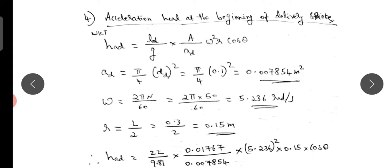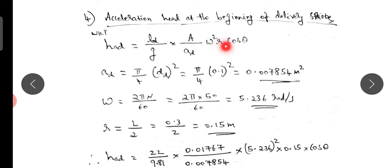Angular velocity ω = 2πN / 60 = 5.236 radians per second. Crank radius R = stroke / 2 = 0.15 m.